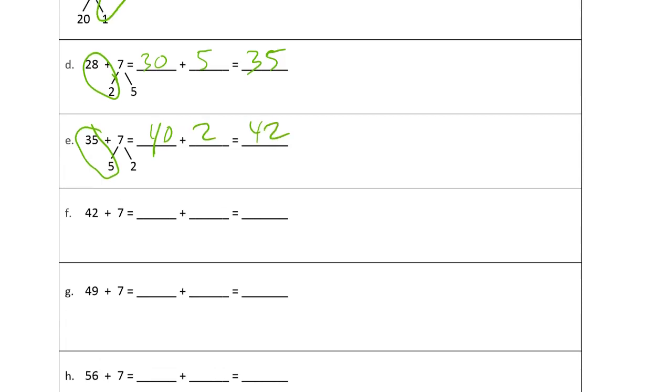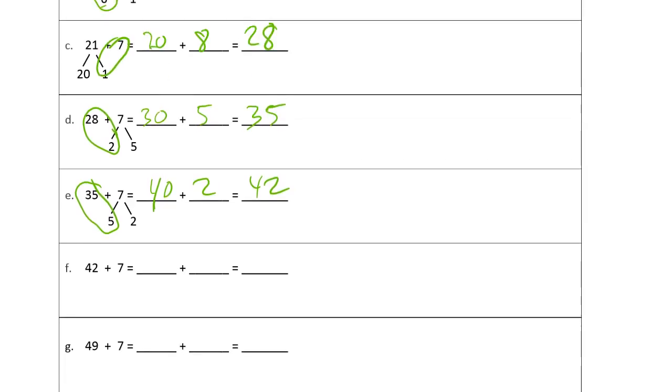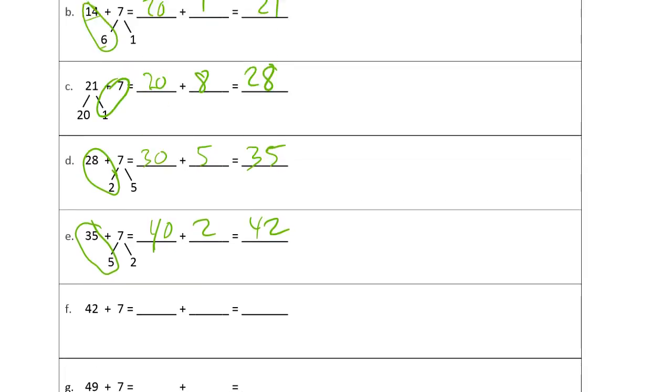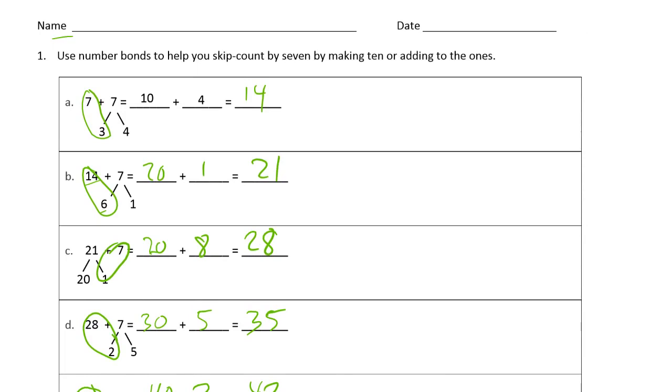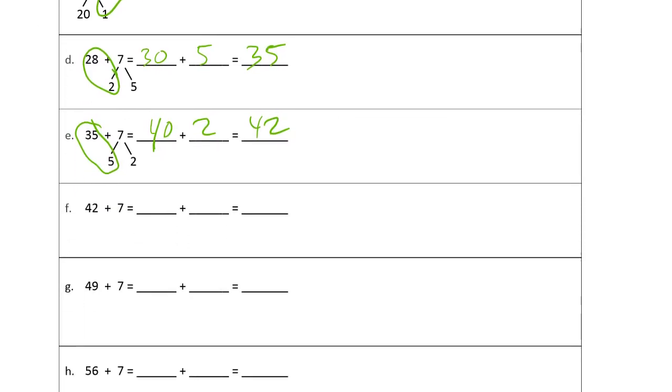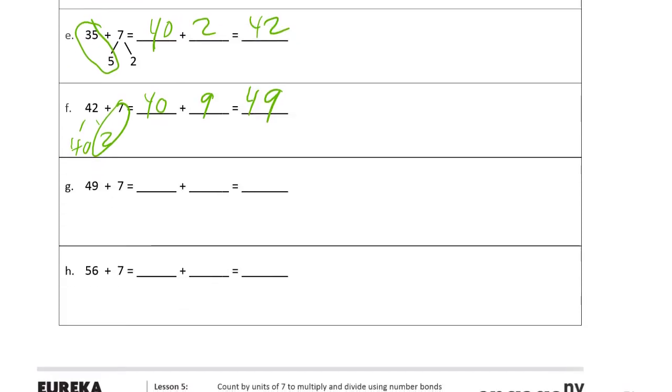And now 42 plus 7, right? We already had the 2 plus 7. Do we already have that? No, but we have, right? We've got 40 and 2. So that's 9. 40 plus 9, 49. And then 9 needs one more to make 10. So we've got 1 and 6. There's 50 plus 6, 56.